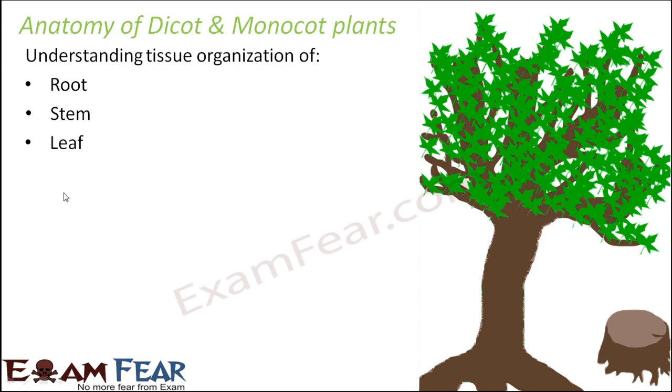We want to understand how the plant is made up of various tissues — vascular tissues, permanent tissues, simple permanent tissues like parenchyma and colenchyma — and see how exactly they are organized inside a root, stem, or leaf. So let us study the structure of monocot root now. I will explain the internal structure of monocot root with the help of a simple diagram.